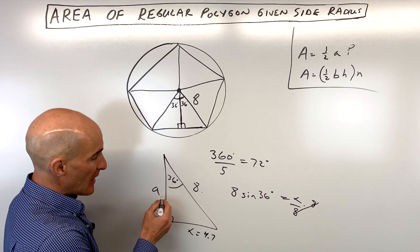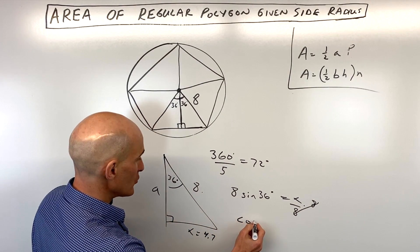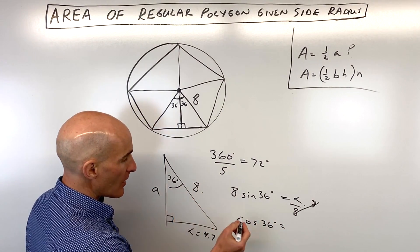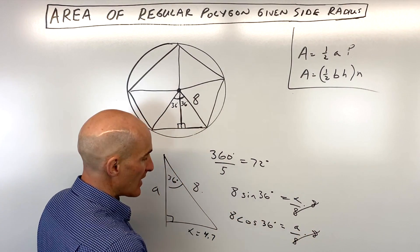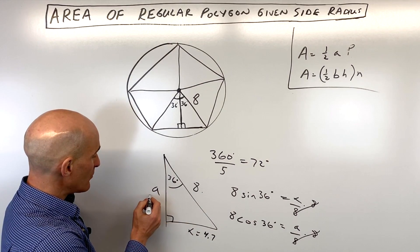And then for this side, we can either do the Pythagorean theorem or we could do the cosine. So we could say cosine of 36 degrees equals adjacent over hypotenuse. So that's A divided by 8. If we multiply both sides by 8, we get A by itself. So that's 8 cosine 36, which is about 6.5.